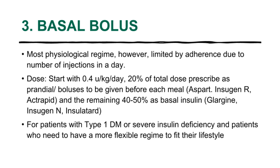The starting total dose is 0.4 units per kilogram per day. 20% of the total dose is given at meal times using rapid or short-acting insulin, and the remaining 40% as basal insulin using intermediate or long-acting insulin. This regime is suitable for patients doing home blood glucose monitoring, those needing intensive insulin therapy such as during pregnancy, patients with frequent hypoglycemia, type 1 diabetes, or severe insulin deficiency.